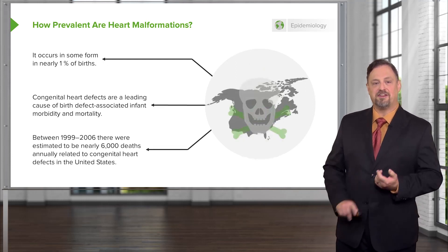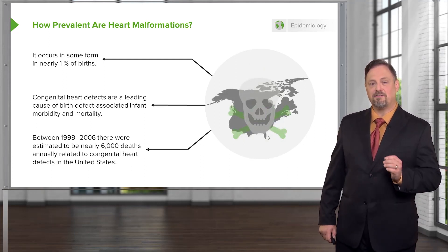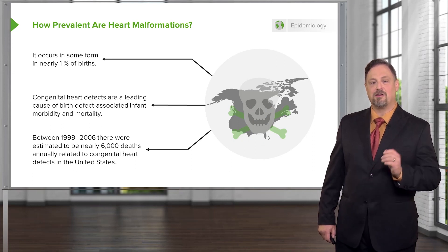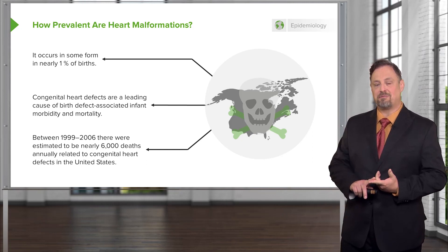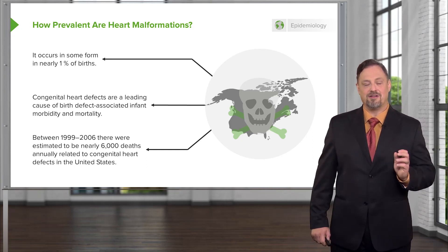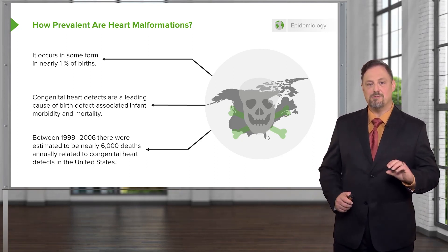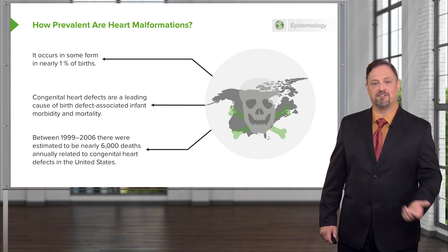In the United States alone, between 1999 and 2000, there were roughly 6,000 deaths associated with cardiac anomalies and malformations. So let's go into the process by which the heart moves from being a single tube to becoming the incredibly complex mechanism that it is.